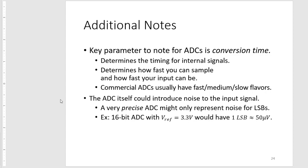Additional notes for using ADCs. A key parameter to note most of the time when dealing with ADCs and microcontrollers is the conversion time, because this determines the timing signals you need and determines how fast you can sample and how fast your input can be. When shopping for ADCs, manufacturers will have fast, medium, and slow flavors depending on your system requirements.